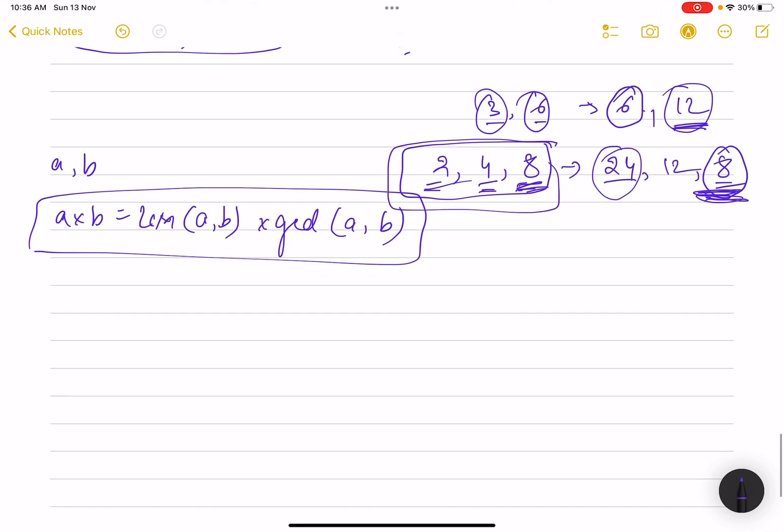What is GCD? GCD is the greatest common divisor. Let's take 3 and 6 as an example. The greatest common divisor is a number which divides both numbers. One divides both, two cannot divide both, but three can divide both, so three is the GCD.